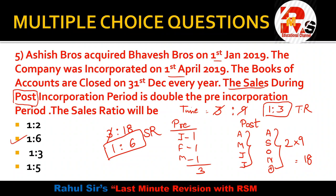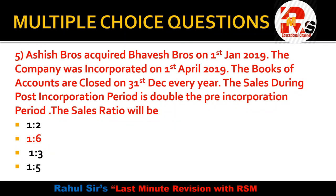Simplifying 3:18 gives us a sales ratio of 1:6. So the right answer for question number 5 is 1:6. This type of calculative question can also be expected in your exam — small questions related to time ratio, sales ratio, CRR calculation, or fresh issue. You can solve these only when you are comfortable with the basics of the chapter.